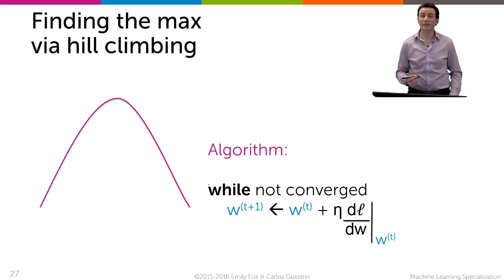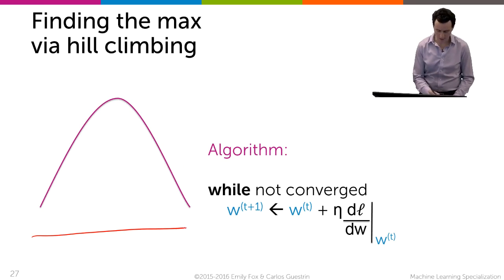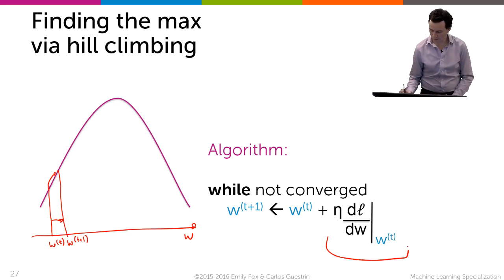You can think about the gradient ascent algorithm as a kind of hill-climbing algorithm. So if you look at the picture on the left here, if you only had one parameter w, you can imagine starting at some point, let's say w^t in the t-th iteration, and then moving a little bit uphill to the next parameter w^(t+1). And the amount you move from one to the other has to do with this term over here, which is the derivative of our likelihood function with respect to the parameter w, and it's computed at the current parameter w^t.